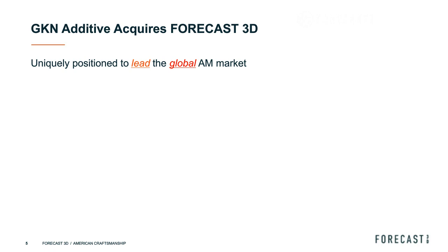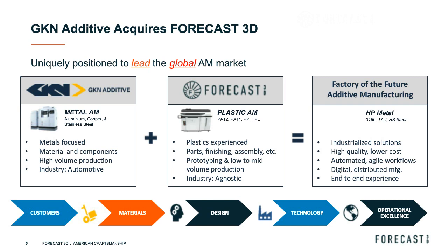The combination of GKN's background in metals, materials, components development, and high-volume production — 13 million parts daily — melding with Forecast's years of experience with plastics and supplementary functions like finishing and assembly, has allowed us to focus on an end-to-end solution for customers: from materials to design for additive manufacturing, picking the right technology for the application, to achieving operational excellence.